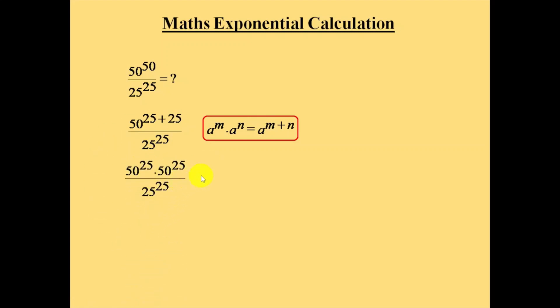We can group this 50 power 25 and 25 to the power of 25, one numerator one denominator, as one group. In this group, we can apply the formula a power m by b power m is equal to a by b whole power m.